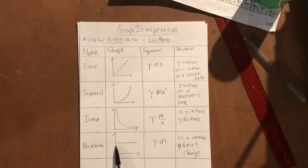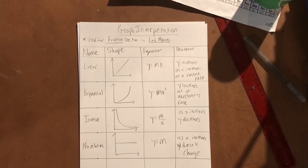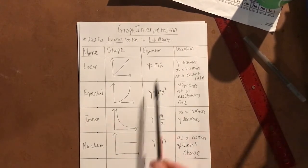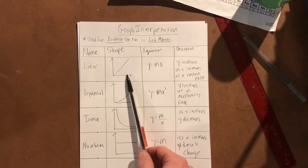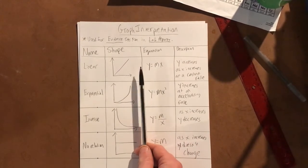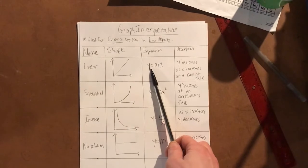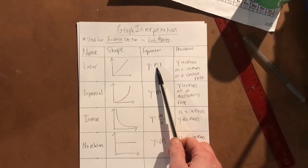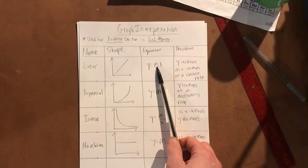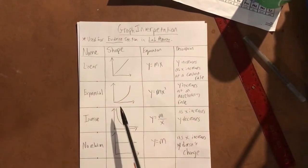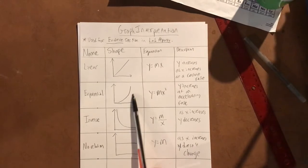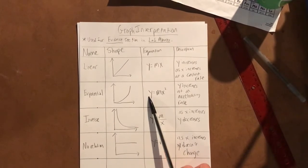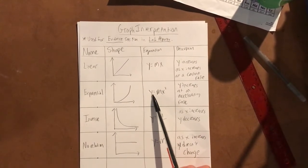We're also going to be using equations on Excel. Whenever you get a straight line, your equation's going to look something like this when you click on the equation on Excel: y equals mx, where m is the slope but it could be any number basically. If it's exponential where the line's curving up, then your equation when you go to Excel is going to look like y equals some number times x squared.